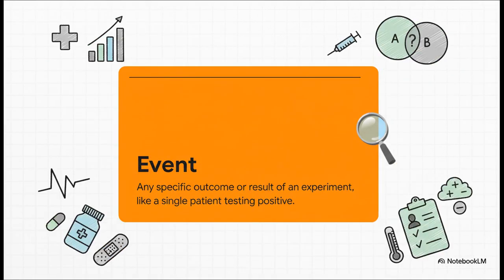And finally, we have an event. An event is the specific outcome we're actually interested in. Out of all the things that could happen in our sample space, the event is the one result we're focusing on. So, if we're testing a patient, the event we might care about is getting that positive result.